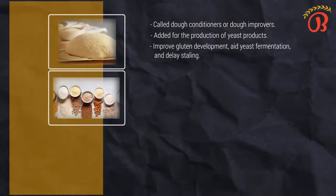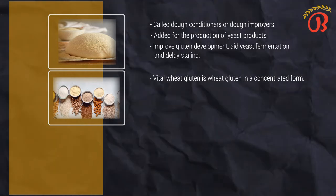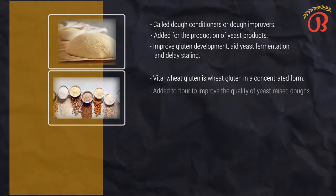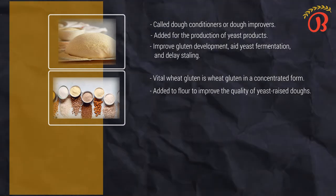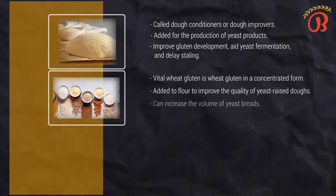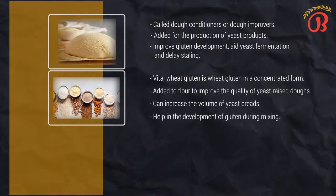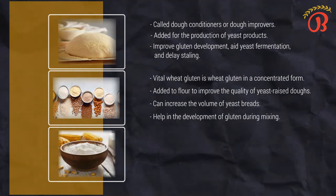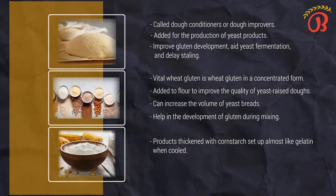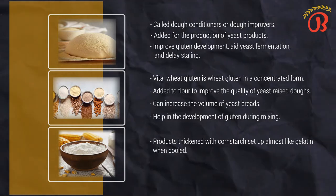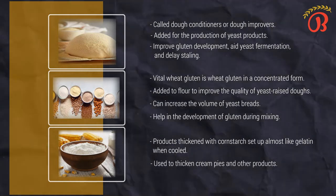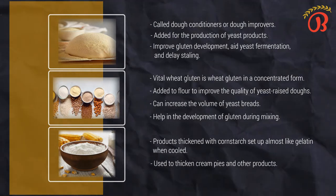Next is gluten. Vital wheat gluten is gluten in a concentrated form, usually about 75% by weight. It is added to the flour to improve the quality of yeast-raised dough. It can increase the volume of yeast bread and aid in the development of gluten during mixing. The fourth ingredient is cornstarch. Cornstarch has a special property that makes it valuable for certain purposes. Products thickened with cornstarch set up almost like gelatin when cooled. For this reason, cornstarch is used to thicken cream pies and other products that must hold their shape.